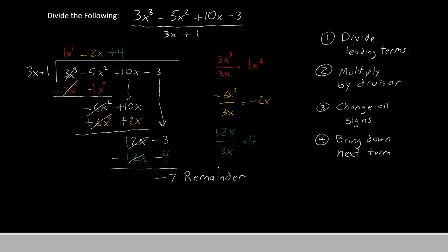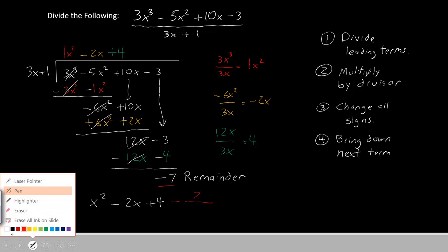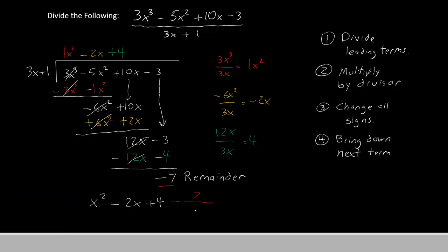Okay, so to write the answer, we're going to write down the terms that we found on top of the bar. So we'll have x squared minus 2x plus 4. That's most of our answer, but we also have to write the remainder. Our remainder here is negative 7, so we have to add on minus 7 and then divide it by something. Well, we're going to write the divisor on the bottom that we used up here. So we'll just have 3x plus 1 on the bottom. So our answer is x squared minus 2x plus 4 minus 7 over 3x plus 1. And that's our final answer.